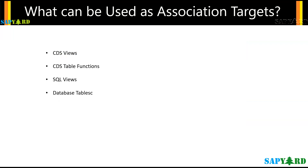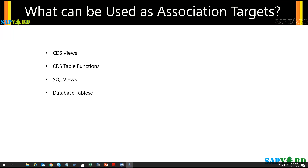The next topic is what can be used as targets for associations in CDS. The options are: another CDS view, CDS table functions, SQL views, and database tables. These four objects can be used as targets when defining an association in CDS. In the next slide we'll talk about the different types of associations — exposed association and ad hoc association.